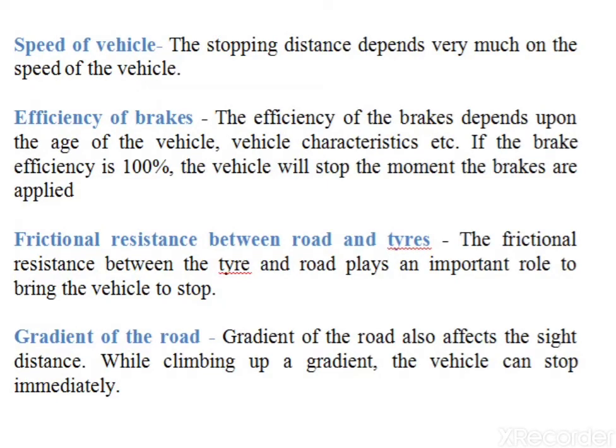The second factor influencing stopping sight distance is speed of vehicle. The stopping distance depends very much on speed. During the total reaction time, the distance moved by the vehicle depends on speed. Similarly, the braking distance — the distance moved after applying brakes before coming to rest — also depends on initial speed. Hence, higher speed results in higher stopping distance, and lower speed results in less stopping distance.